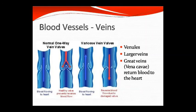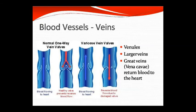Now we look at veins. Arteries, capillaries, and veins are the three main vessel types. Veins have one-way valves that allow blood to flow only toward the heart. If the heart valve is working correctly, reverse blood flow is stopped. If the valve is damaged, reverse flow occurs — this is what causes varicose veins. In varicose veins, normal blood flow is lost.